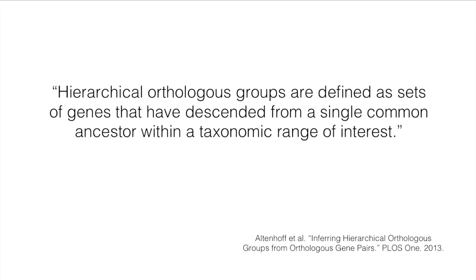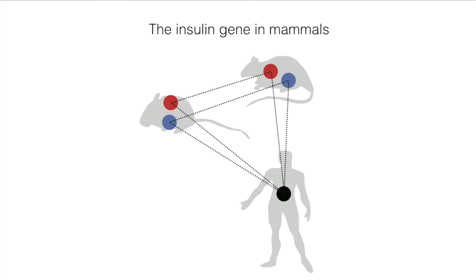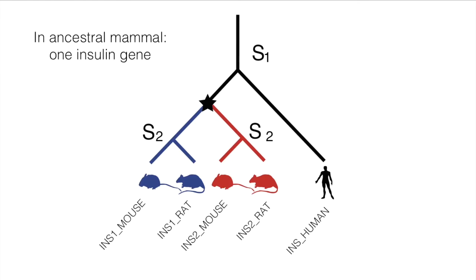HOGs are defined as groups of genes that have descended from a common ancestral gene in a given clade of species. Let's start by looking at the insulin gene in human and rodents. In human there is one copy, but in the two rodents there are two copies. To answer what's going on, we need to look at the history of these five genes, which is depicted in this phylogenetic tree.